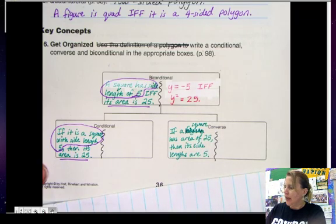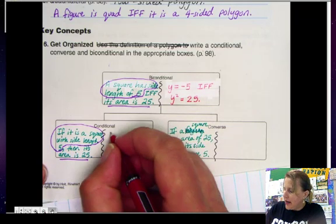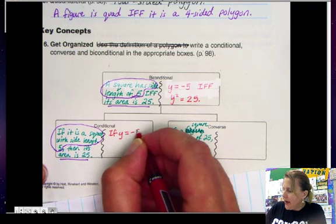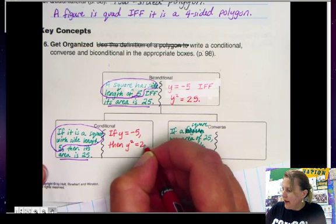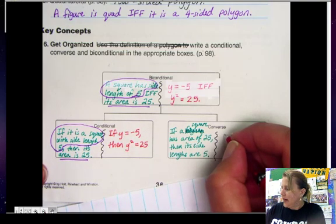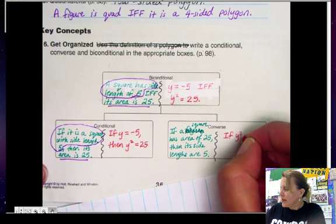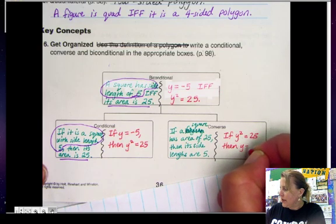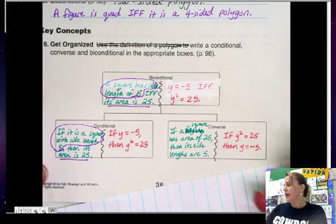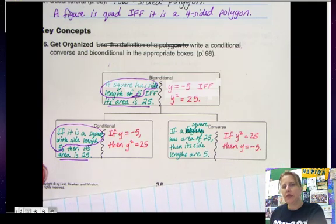Notice I flip-flopped it because it's the converse. So this next one, writing a biconditional of this one here, I would write: if y equals negative 5, then y squared equals 25. And this one: if y squared equals 25, then y equals negative 5.